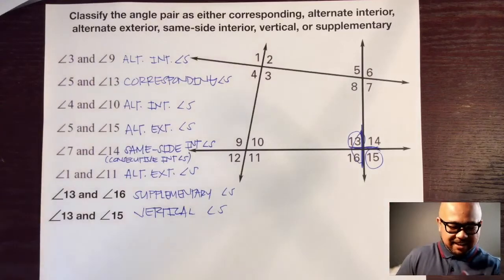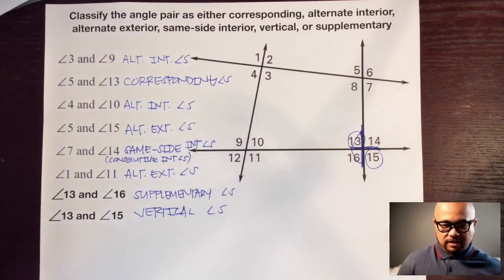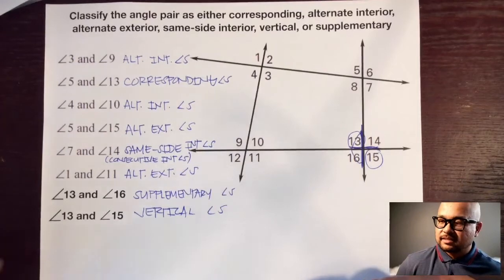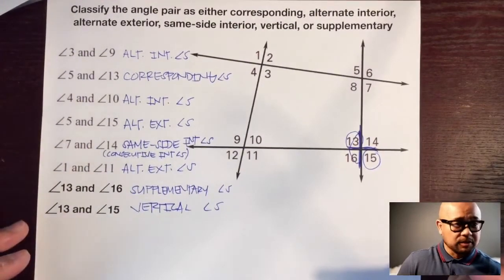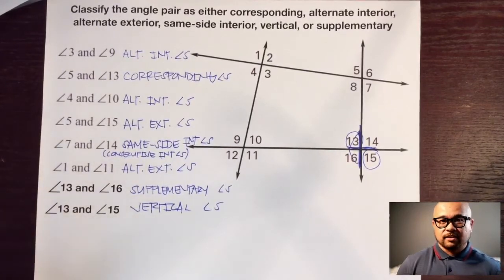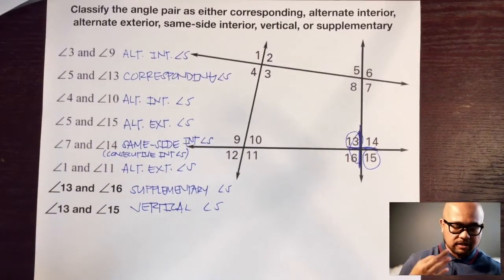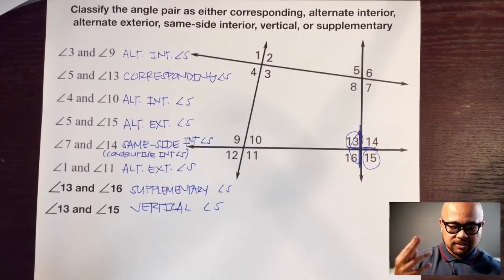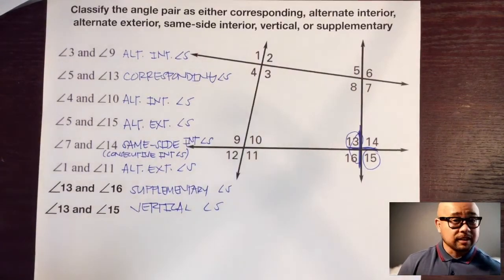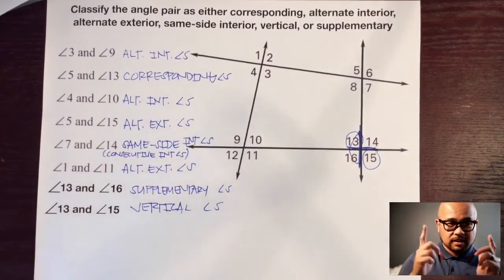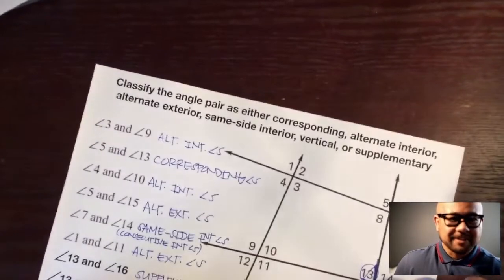Make sure you can recognize these almost instantaneously because that will help you later in geometry. The types to know are: corresponding, alternate interior, alternate exterior, and consecutive interior or same-side interior — plus the review types: vertical angles and supplementary angles. We didn't review complementary angles, so check that out too. These are super important for geometry — have a great day!